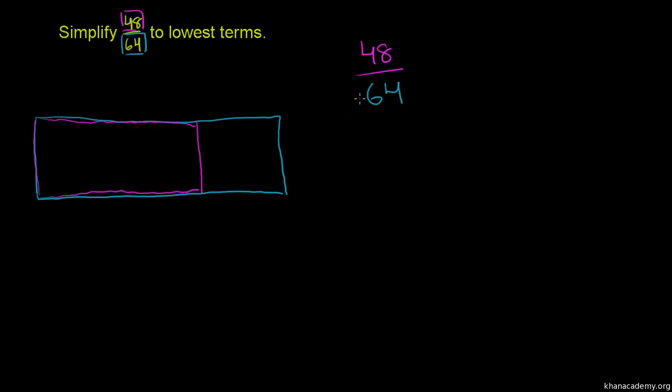Now, is there a way to group these 48 or these 64 into groups of numbers that will maybe simplify them a little bit? And to think about that, you'd have to think about what is the largest factor that is common to both 48 and 64? Or you could think of it as, what is their greatest common divisor?